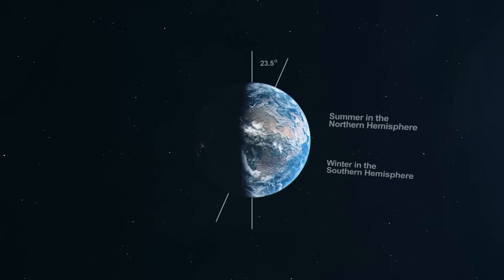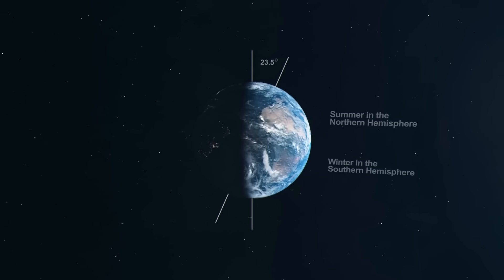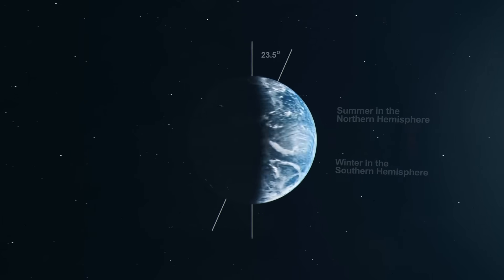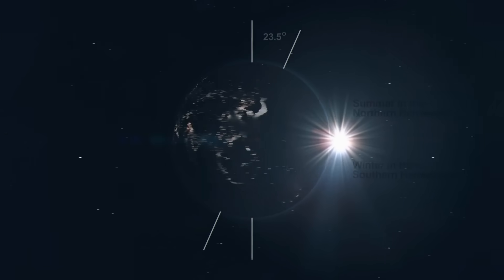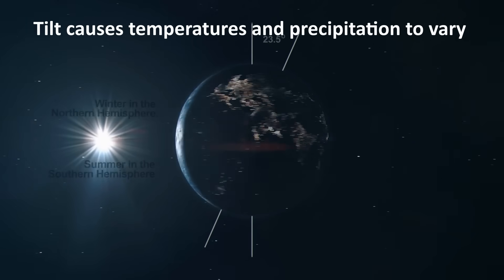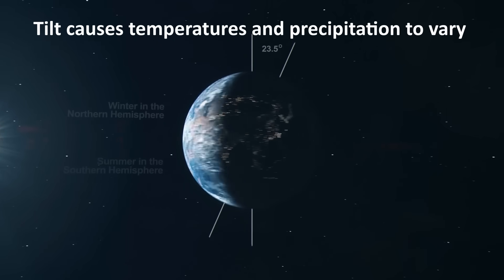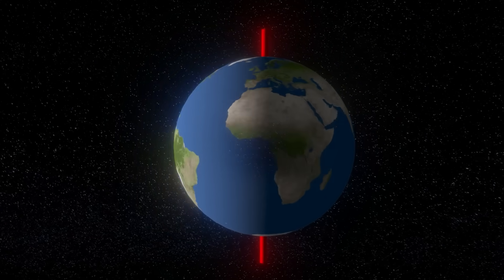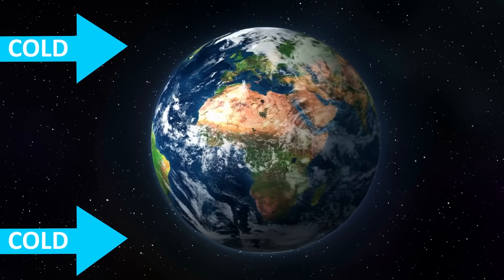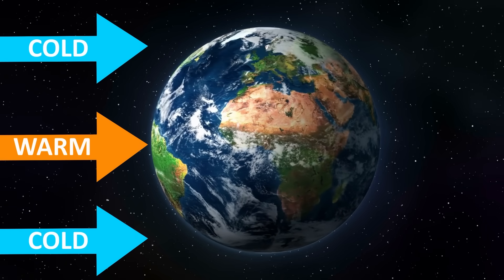Because the earth does have a tilt, it causes the sun's rays to strike the northern and southern hemispheres at different angles during different times of the year, which makes the temperatures and precipitation rates fluctuate drastically depending on the season. So without this tilt, temperature and precipitation patterns would not vary much. It would still be warm in the equator and cold at the poles.